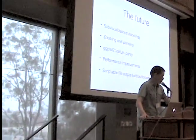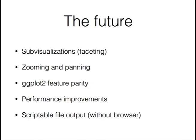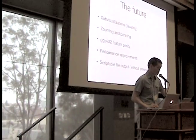So the future, there's some things that we still need to do. We're planning on implementing sub-visualizations or faceting. Zooming and panning, so you can click and drag and zoom in and out with the mouse wheel. And we need to fill in some gaps for ggplot2 feature parity, like just setting box plots and other types of plots like that. We want to improve the performance, and also implement scriptable file outputs so that these plots can be generated without a browser. Right now they're actually rendered in the browser, but we want to make it possible to do it without a browser as well.